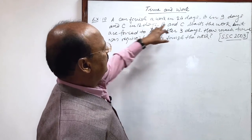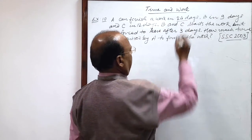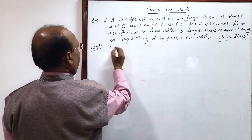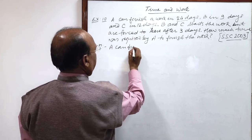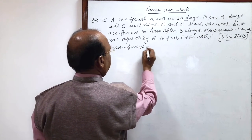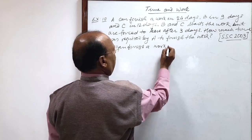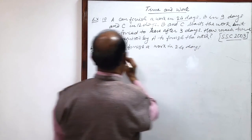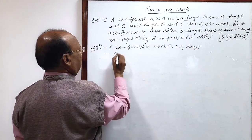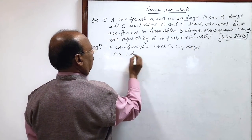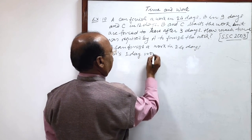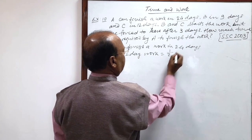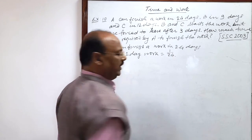A can finish a work in 24 days. So, therefore, A's 1 day work will be how much? You know reciprocal of this much: 1 by 24.